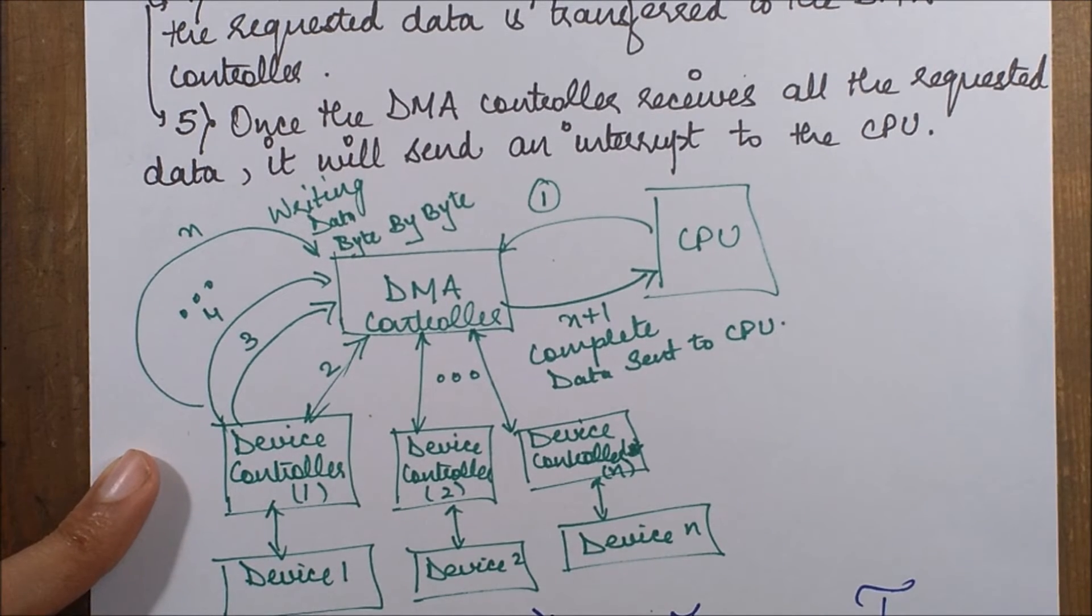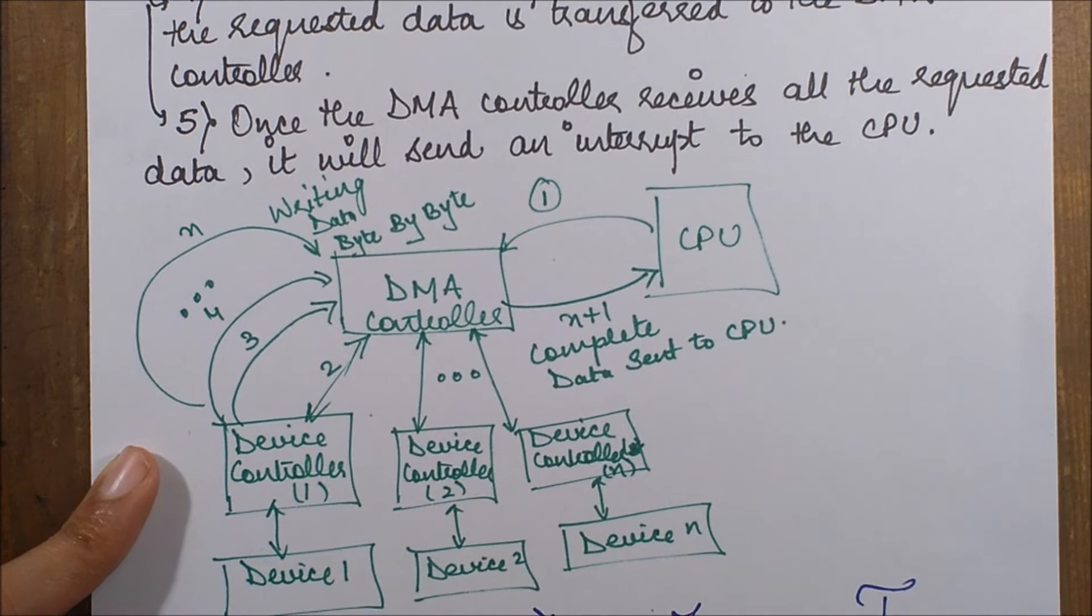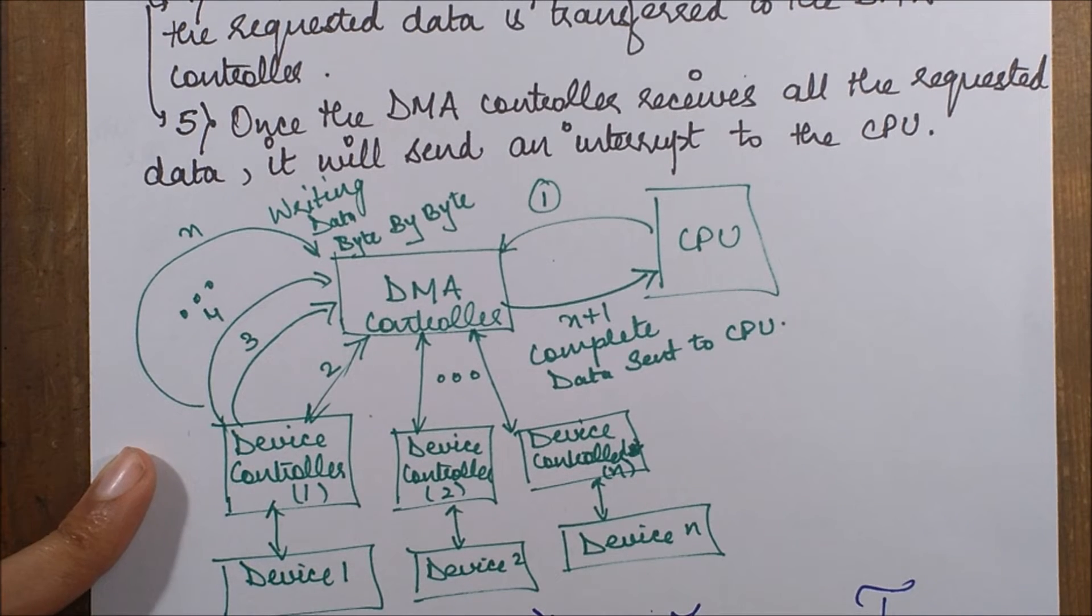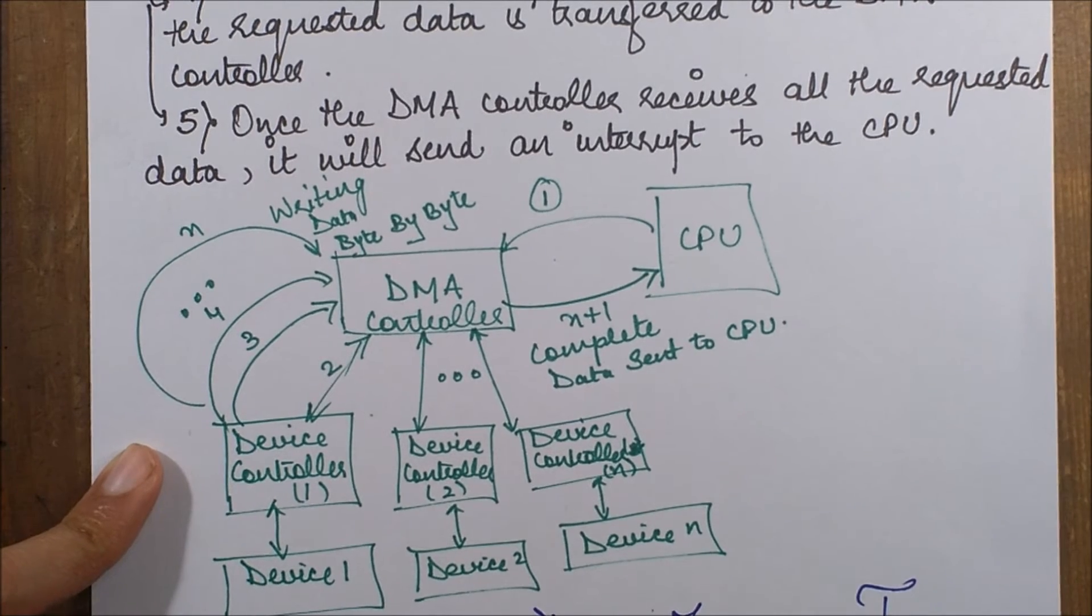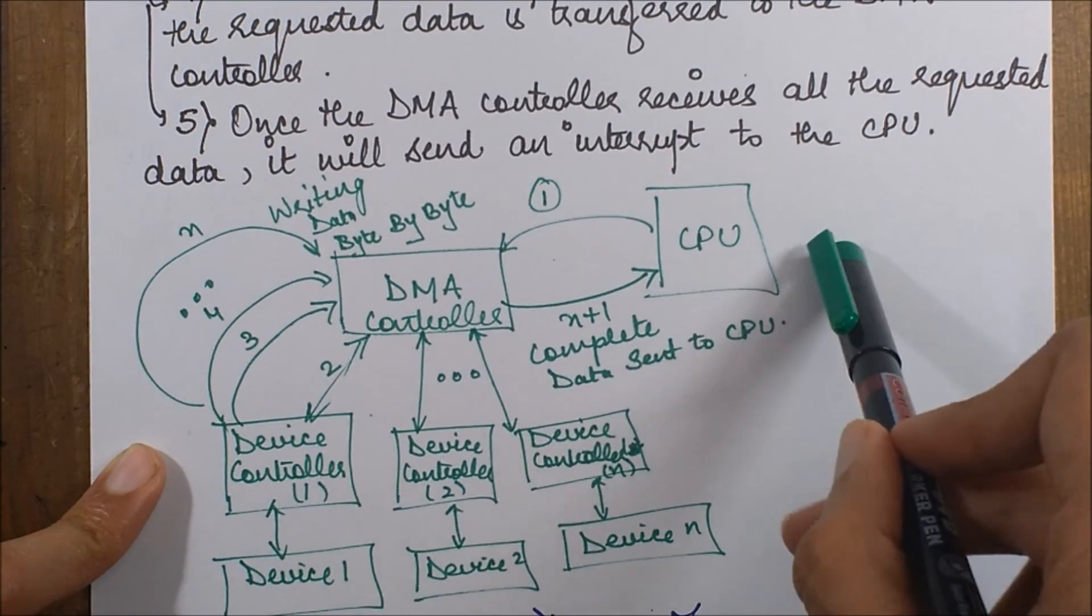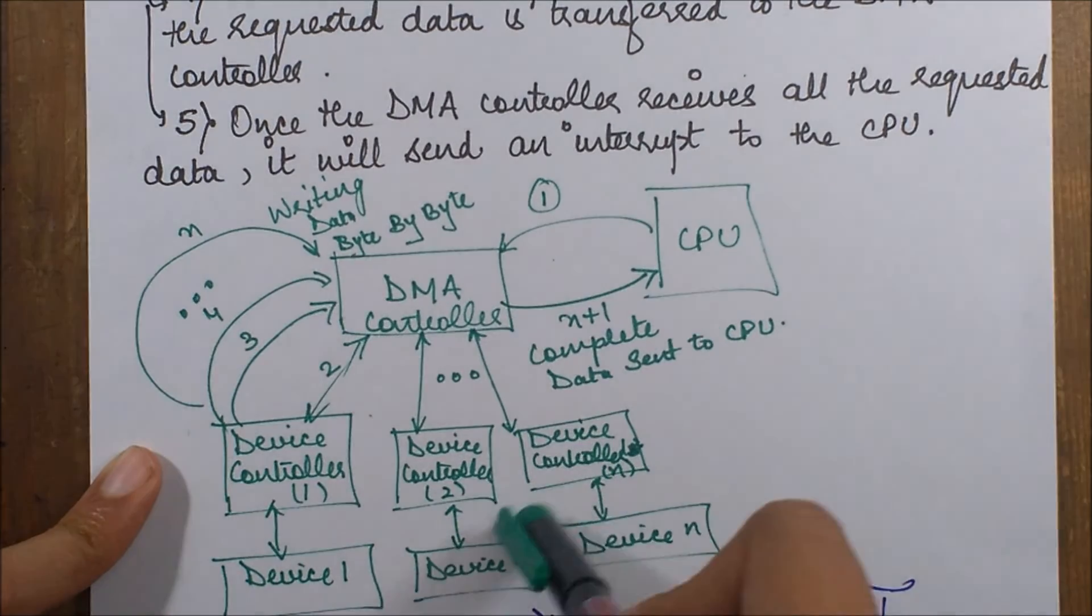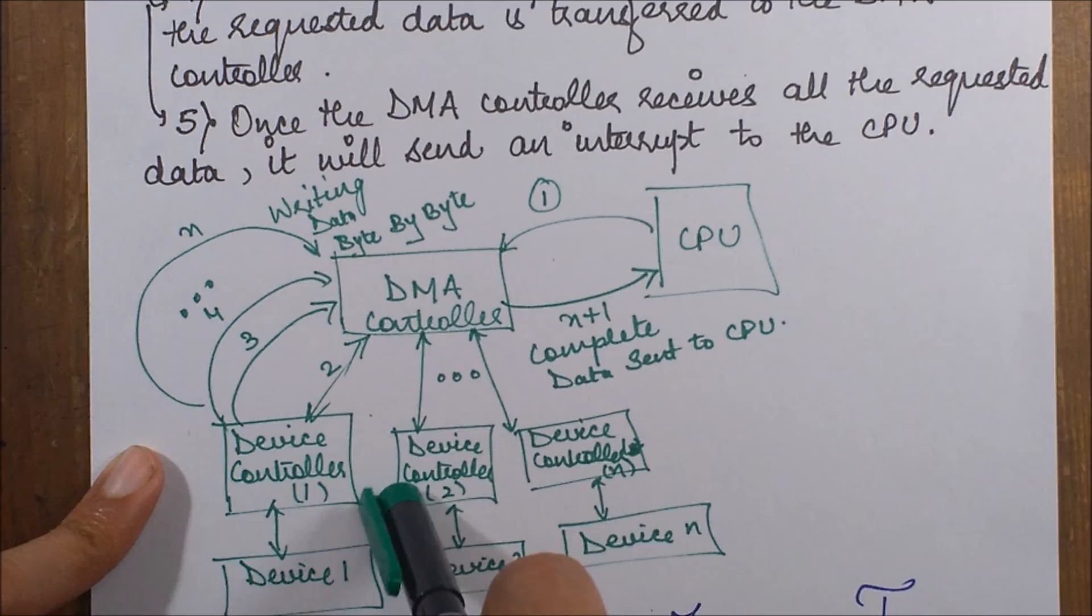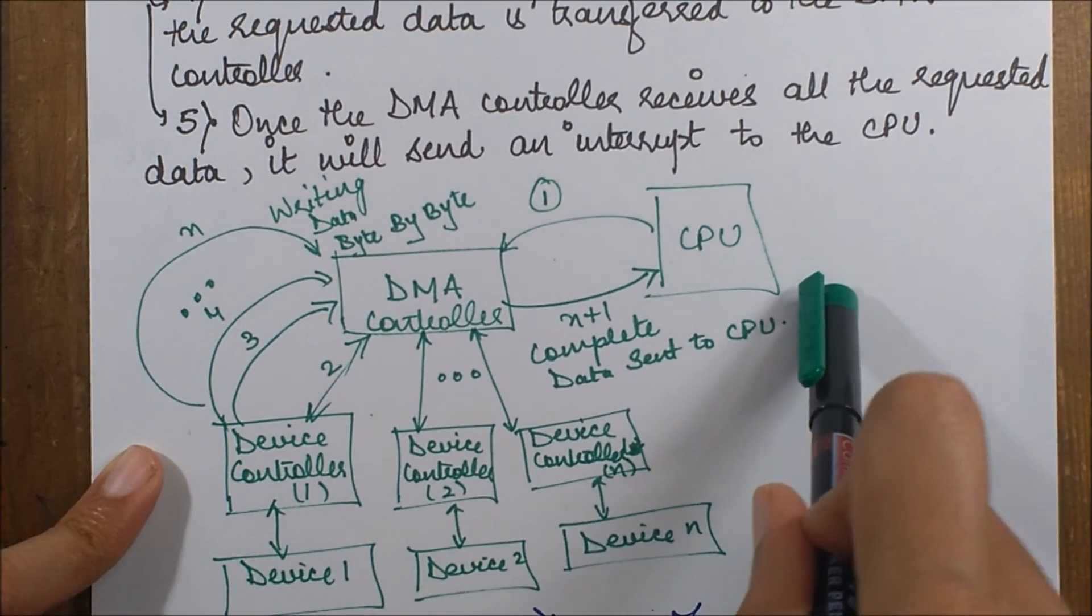That's all for the entire process of how DMA collects the data and then sends it to the CPU. In the next session we are going to move into more details by understanding the various modes in which the DMA works while transferring this data.